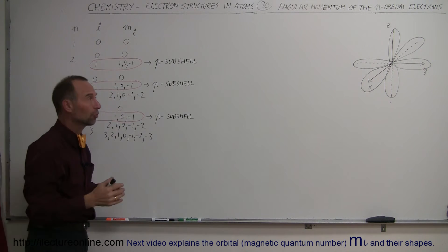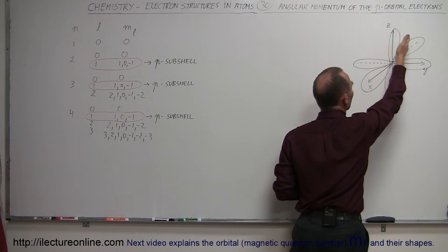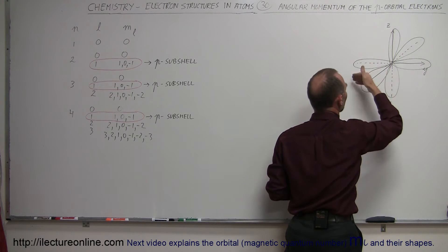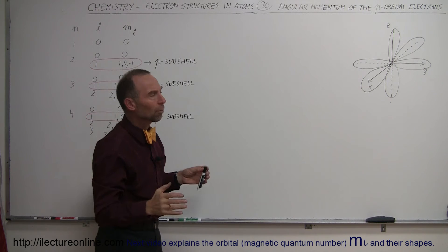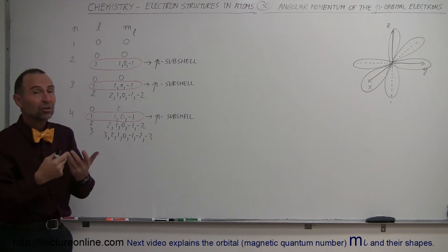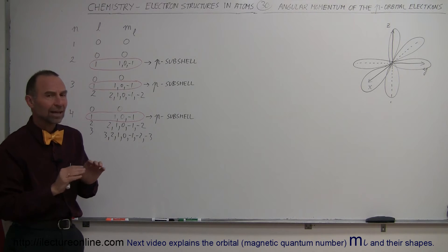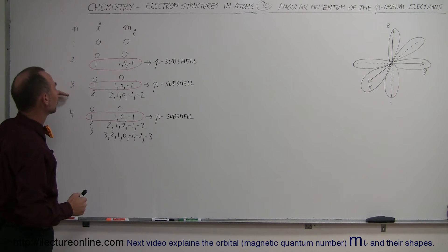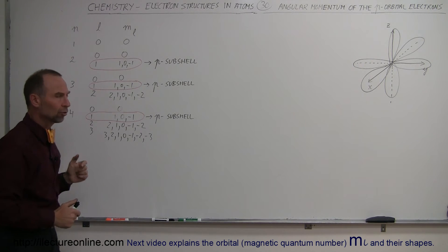The p-orbitals are illustrated here. We have one along the z-axis — a double lobe along the z-axis — a double lobe along the y-axis, and a double lobe along the x-axis. Those are what we call the 3 p-orbitals. Each of those p-orbitals can contain two electrons, so there can be a total of 6 electrons in the p-sub-shell at each energy level — 6 at the second level, 6 at the third level, 6 at the fourth level, and so forth.